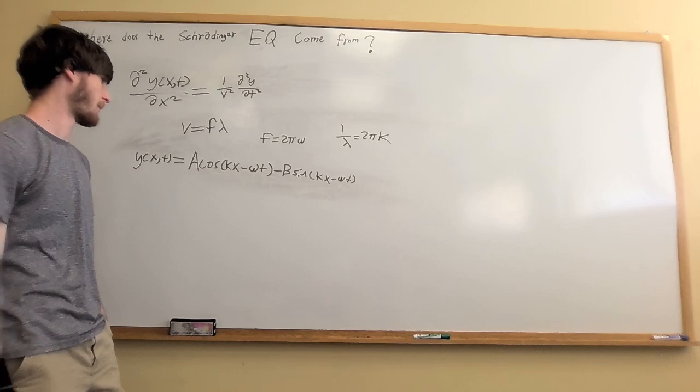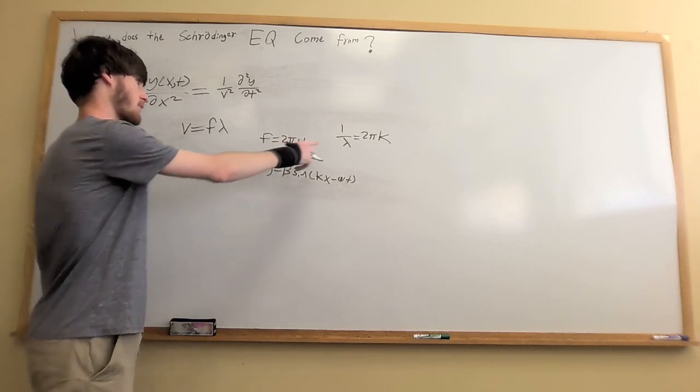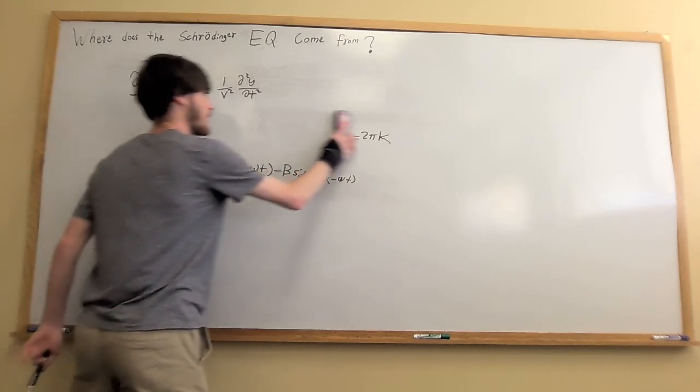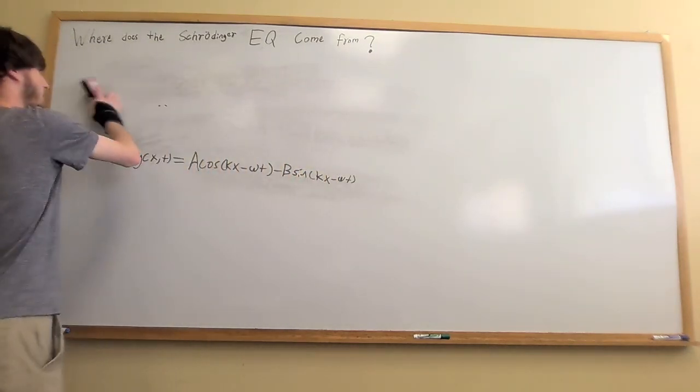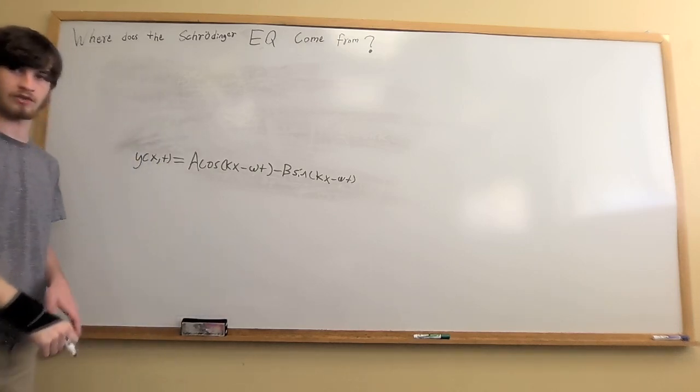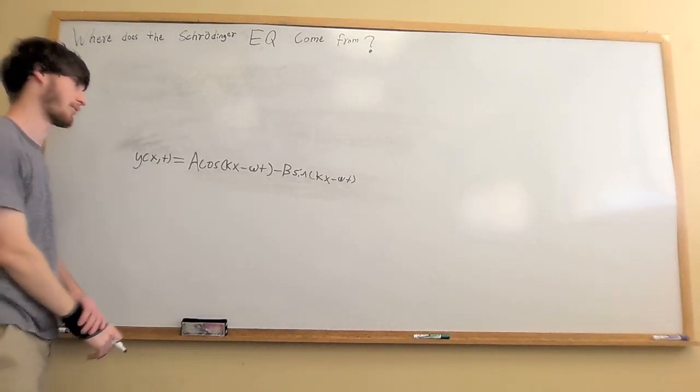Lambda equals 2 pi over k, and k is called a wave number, where lambda is a wavelength. This is the general solution. Given this general solution to our mechanical wave function, this will be our guess when we guess the wave function for a quantum model.